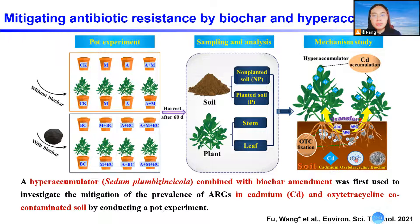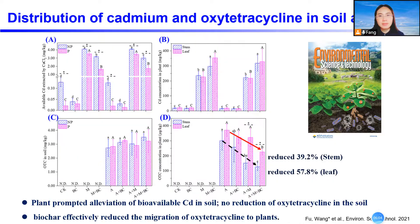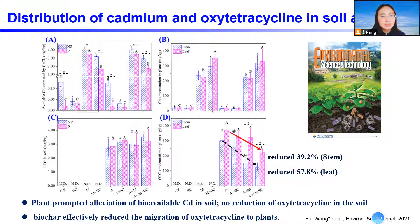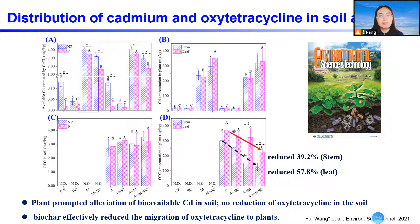We even used biochar combined with a hyperaccumulator to tackle soil co-contaminated by metals and antibiotics. We found that the hyperaccumulator increases metal transfer from the soil to the plant and accumulates it inside, but showed no significant difference in antibiotic levels in the soil with and without the plant. However, with biochar addition, it indeed reduced the concentration of antibiotics in the plant stem and leaves.